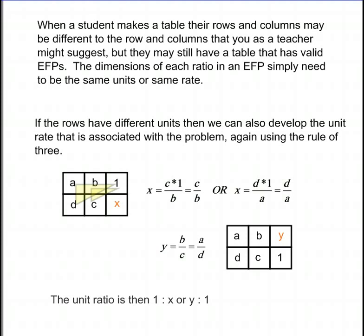If the rows have different units, then we can also develop the unit rate that is associated with the problem, again using the rule of three. So here I've got a over d equals b over c, and the unit rate is 1 is to x. So we can calculate x, x equals 1 times c divided by b, or x equals 1 times d divided by a.